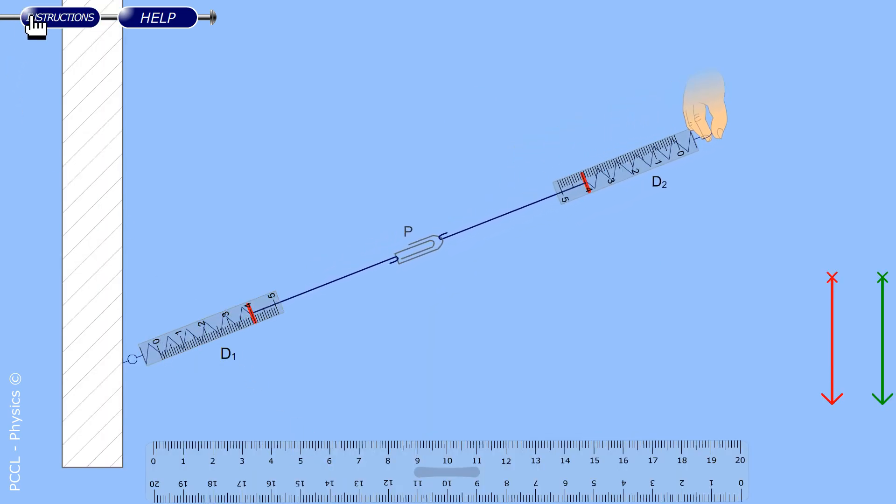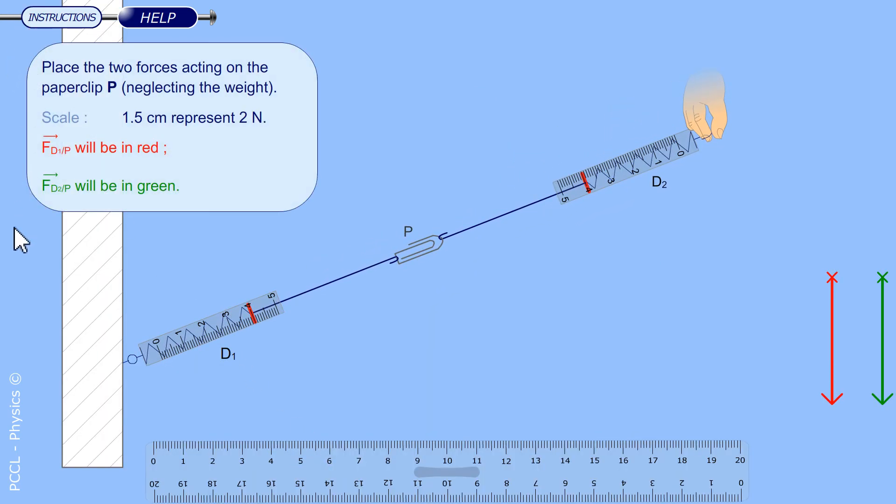Next situation. It seems that there are two forces. One in red is the force applied by the spring scale D1 on P, on the paper clip. So I already know that the point of application will be on the paper clip. The little cross is on the paper clip. Is it pushing or pulling the spring scale? It holds back so the force is like that. Only the length is missing.